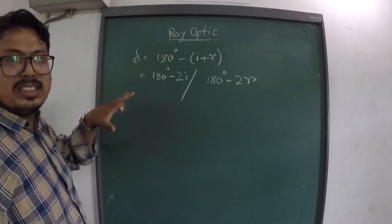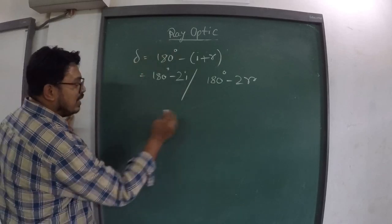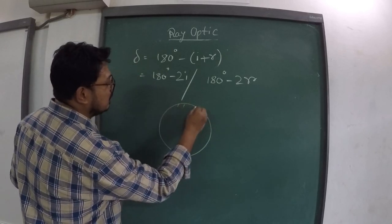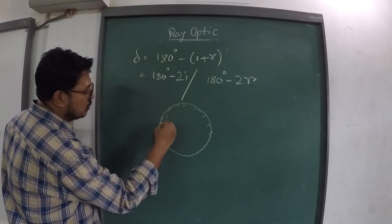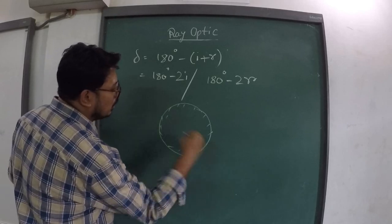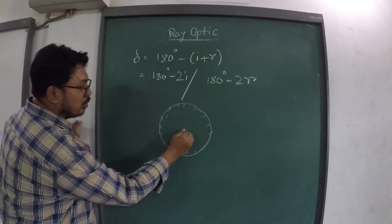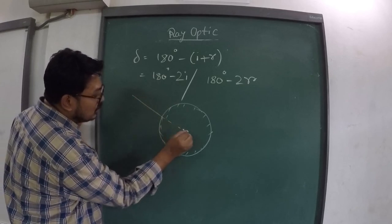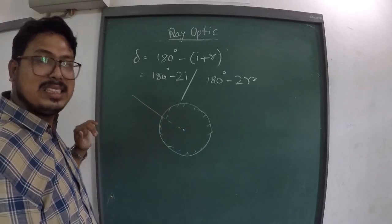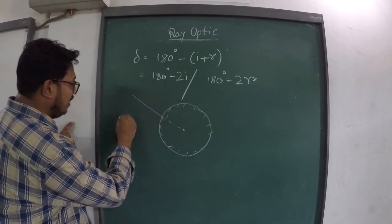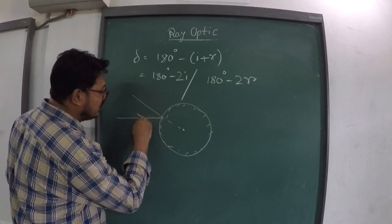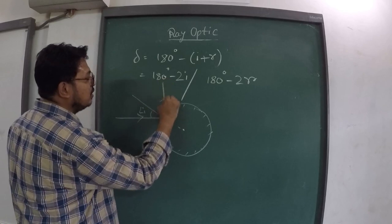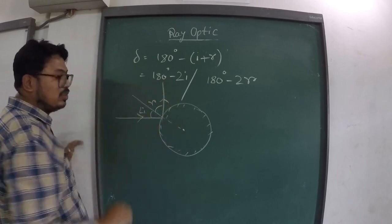In the case of a spherical surface, whenever we draw the normal, the normal will always go to the center of the sphere. If light falls on a spherical surface, according to the law of reflection, it will reflect back accordingly.